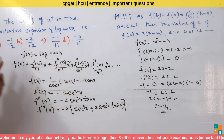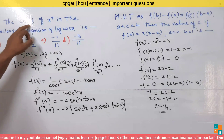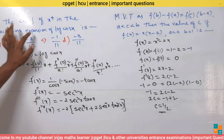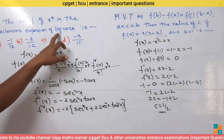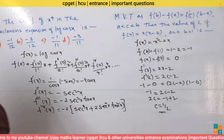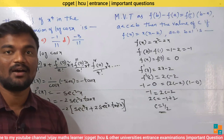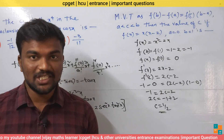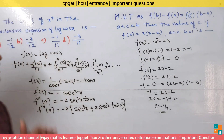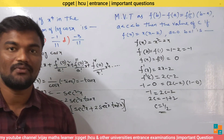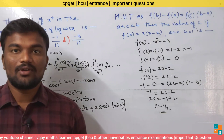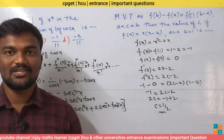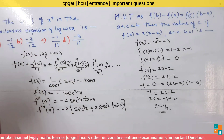Fourth question: Find the coefficient of x⁴ in the Maclaurin's expansion of the function log(cos x). We need to find the coefficient of x⁴ in the Maclaurin series expansion of f(x) equals log(cos x).